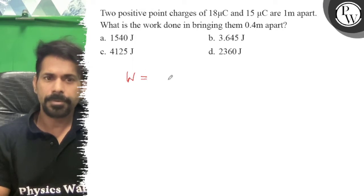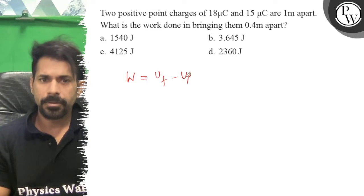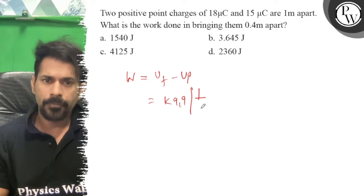We know work done will be the change in potential energy. U final minus U initial. So KQ1Q2, 1 upon R1 which is 0.4, minus 1 upon R2 which is 1.